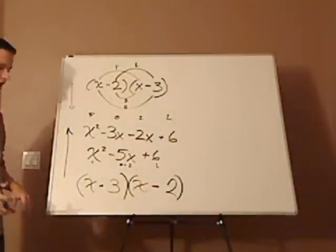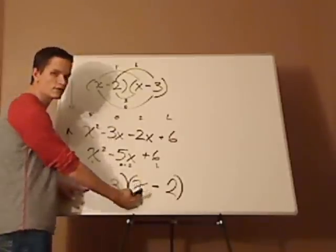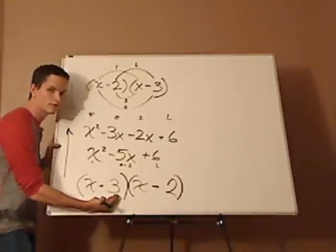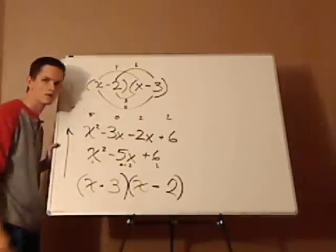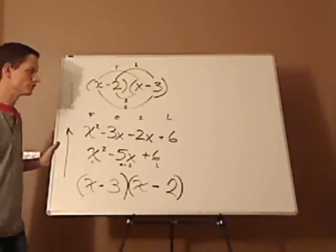And then a way to check yourself, since you're purposely setting it up for the first term, you already did that, the x times the x. And then you did the 3 times the 2. Already, all you have to do is check the middle term.